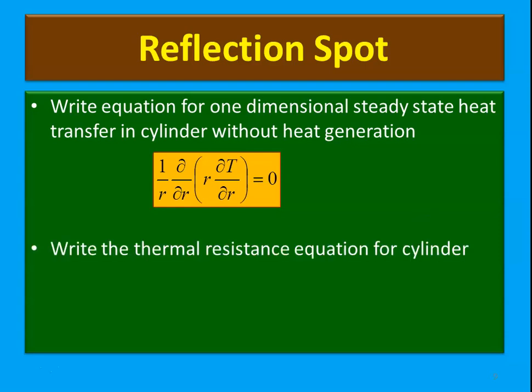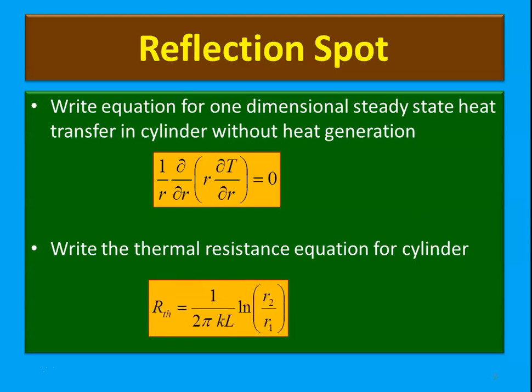Another question: Write the thermal resistance equation for a cylinder. Take a moment and write the answer. The thermal resistance for the cylinder is R_thermal = (1/(2πkL)) · ln(r2/r1). If your answers are correct, you are good.